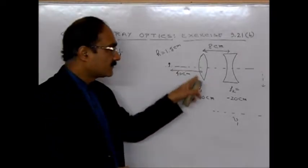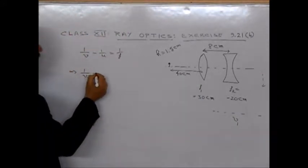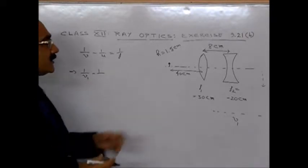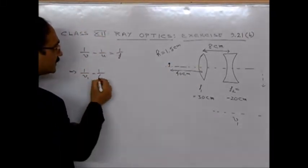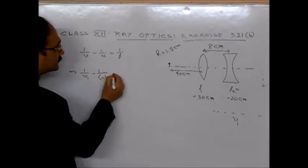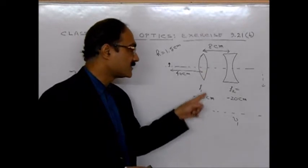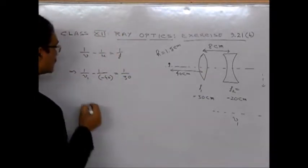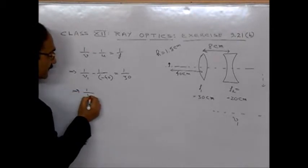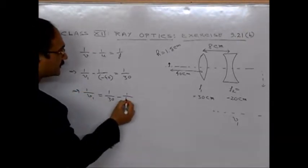We have the standard lens formula, which is 1 by V minus 1 by U equal to 1 by F. So this formula will give us 1 by V1 minus 1 by U. U is 40 cm on this side, so that will be minus 40 equal to 1 by F. F is, for the convex lens, given to be 30 cm.